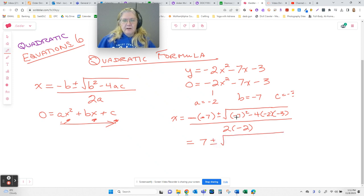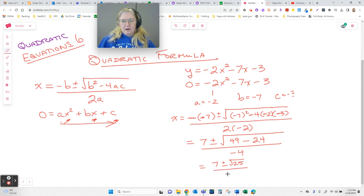The square root of negative 7 squared is 49. Now, I have a minus times a minus times a minus. We're going to end up subtracting. 4 times 2 times 3 is the same as 4 times 6. So, that's minus 24 all over negative 4 equals 7 plus or minus the square root of 25 all over negative 4.